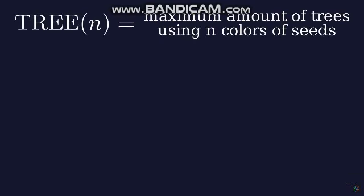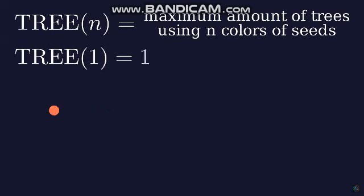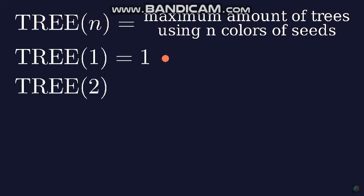The TREE(n) function tells us how many trees we can build using n colors of seeds. Using one color, we can only build one tree, because the first tree would have 1 seed, and any further trees would contain this tree, so TREE(1) is equal to 1. When we have 2 colors of seeds, one red and one green, the first tree has 1 red seed. The next tree can't have any red seeds because it would contain the first tree, so we use 2 green seeds. If we build the next tree, we still can't use red seeds, and we also can't use more than 2 green seeds. But the third tree can have at most 3 seeds, so we can have 1 seed, and this can only be a green seed, to not contain any previous trees. We can't build any more trees, so TREE(2) is equal to 3.